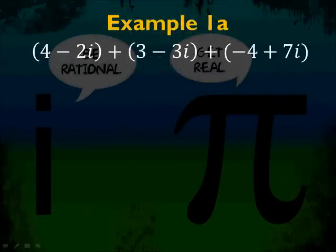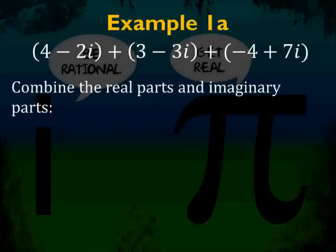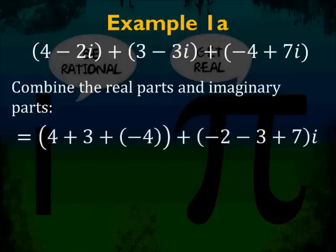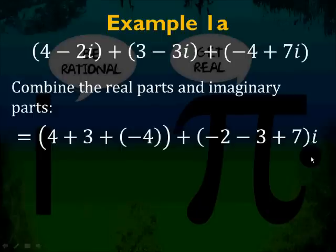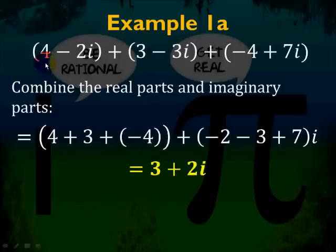Example 1a: we have 4 minus 2i plus 3 minus 3i plus negative 4 plus 7i. To add these together, combine the real parts and the imaginary parts with each other. So 4 plus 3 plus negative 4 go together, and negative 2 minus 3 plus 7i go together. All you have to do is combine like terms, and you end up with 3 plus 2i. Add the real parts together and add the pure imaginary parts together.